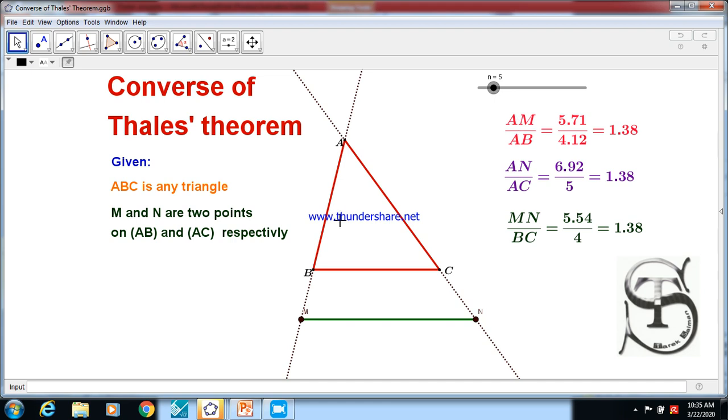You see here AM over AB, the segment AM over AB is equal to 1.38. The segment AN over AC is the same ratio, 1.38, and MN over BC is the same value. Let me change the position of M and N. You see the value changes but still equal. If I put it here, it's still equal. Let me put M and N here before the triangle. You see, it's also equal.